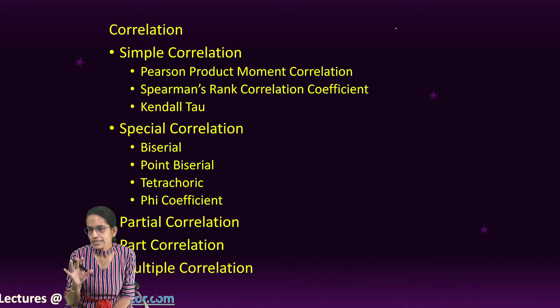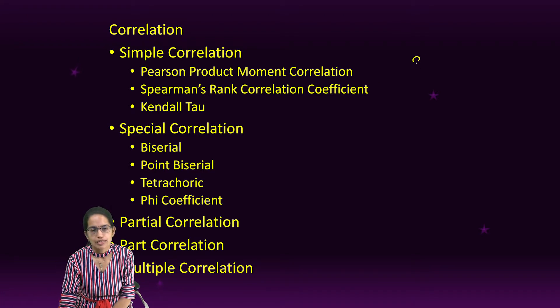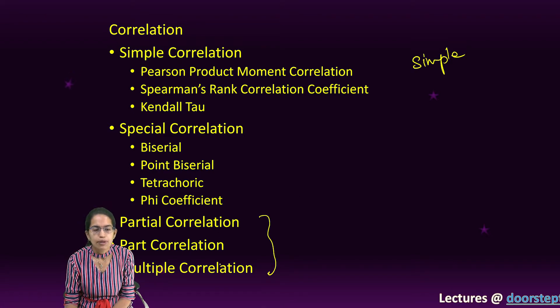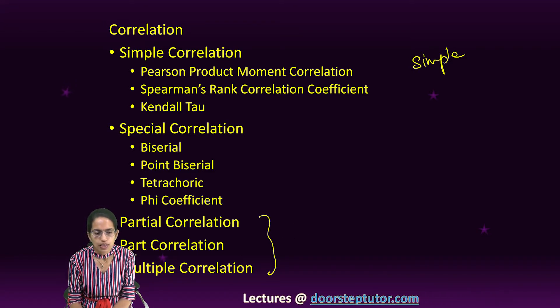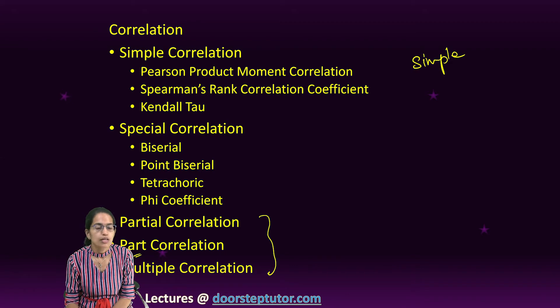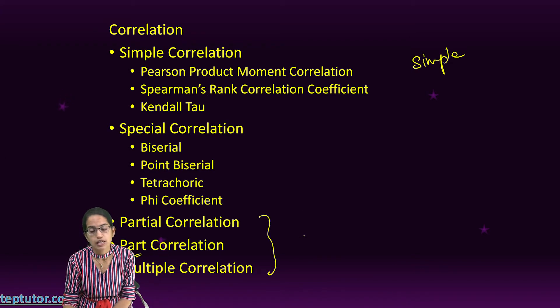Now correlation can be of various types. We can broadly classify it as simple correlation, or multiple and partial correlation, part correlation also known as semi-partial.